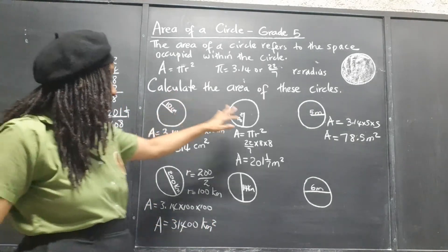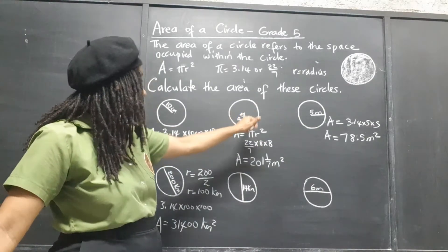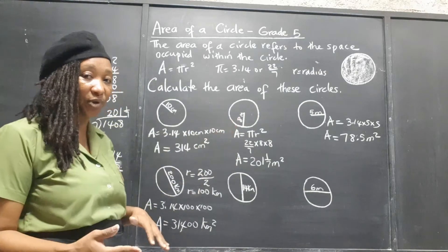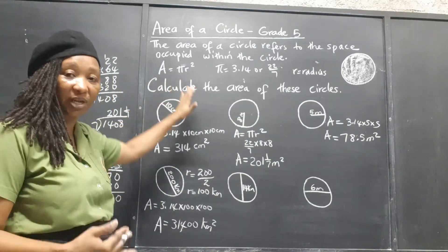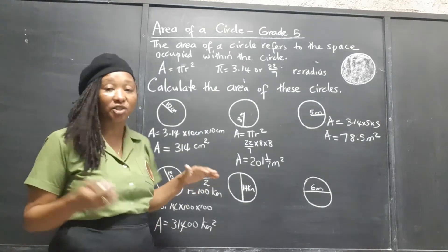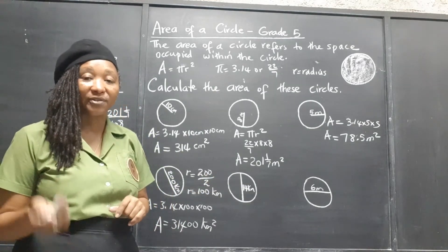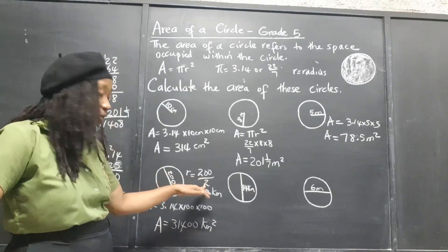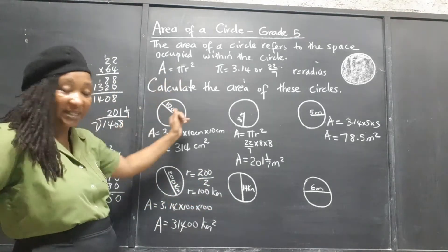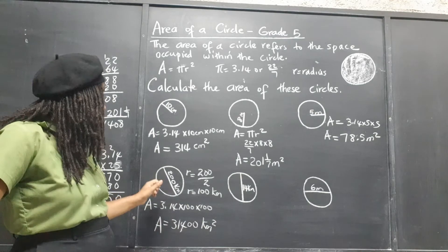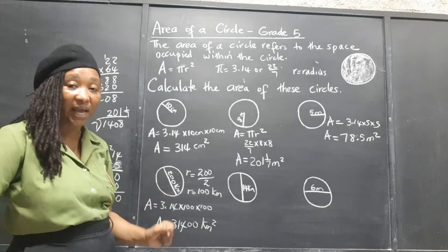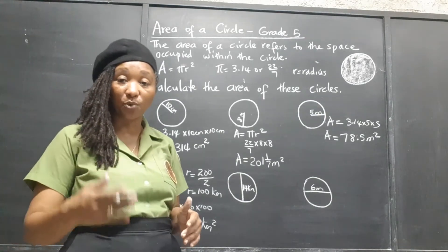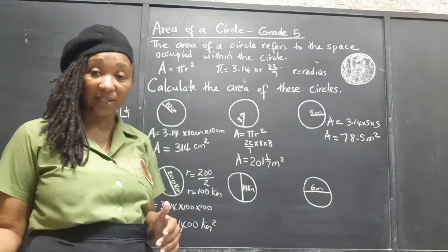So if they give us the radius — the distance from the center to the circumference — we need pi times the radius times the radius. But if they give us the diameter, we have to do the additional step: divide the diameter by 2 to get the radius, and then pi times the radius times the radius. If you're working with powers of 10 at all, I suggest you use the decimal because it's easy to multiply by powers of 10 — you just move that many places to the right or add that many zeros.